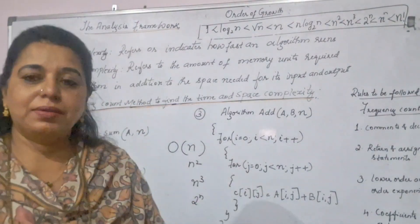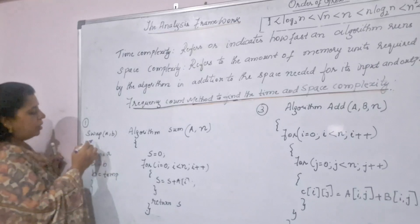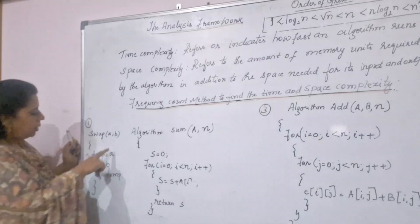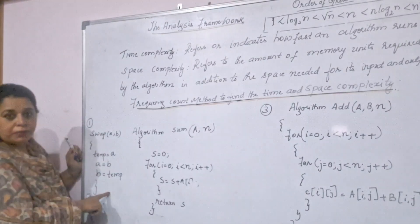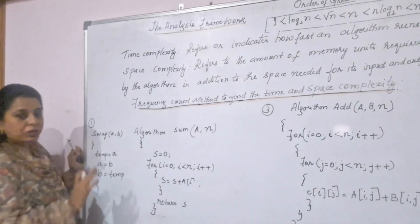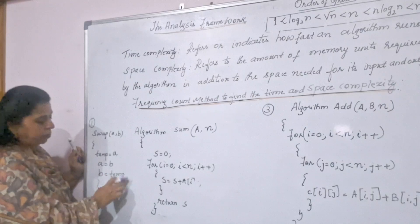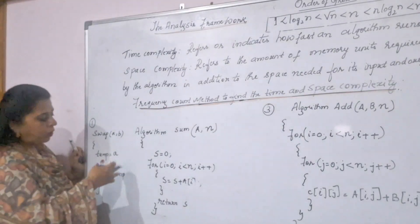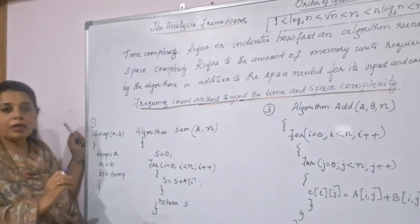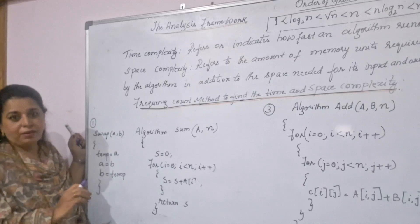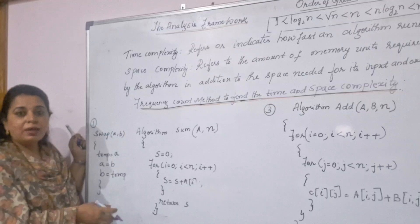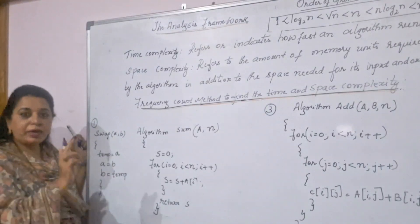I am showing this with three examples. The first algorithm is swapping two numbers using a function where a and b are the two numbers as input. The logic uses a temporary variable to swap the numbers. There are three important statements. When counting executions, remember: you should not include the time taken for comments and declarations.